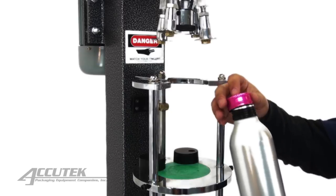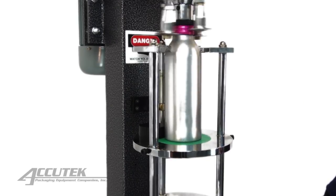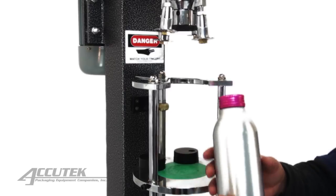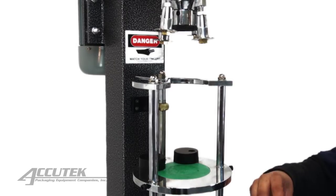The ROPP capper works by taking a smooth skirted shell or sleeve made of a soft metal and forming it around the neck of the bottle via rollers so that its shape conforms with the threads and ridges molded on the bottle's surface.